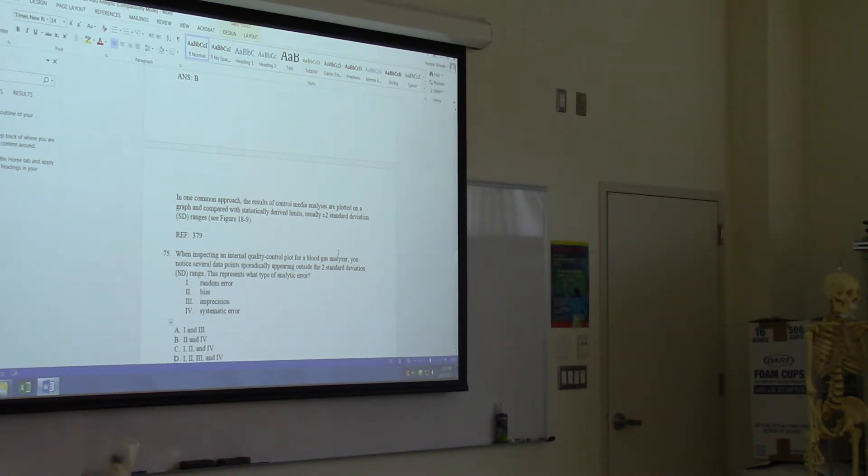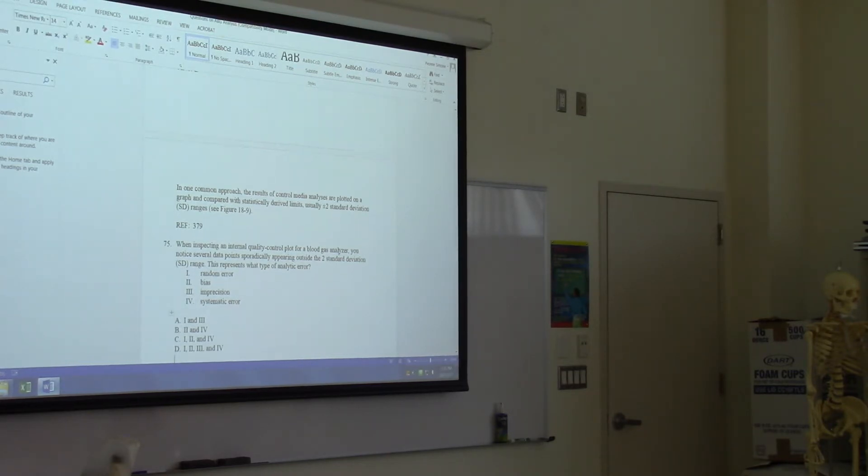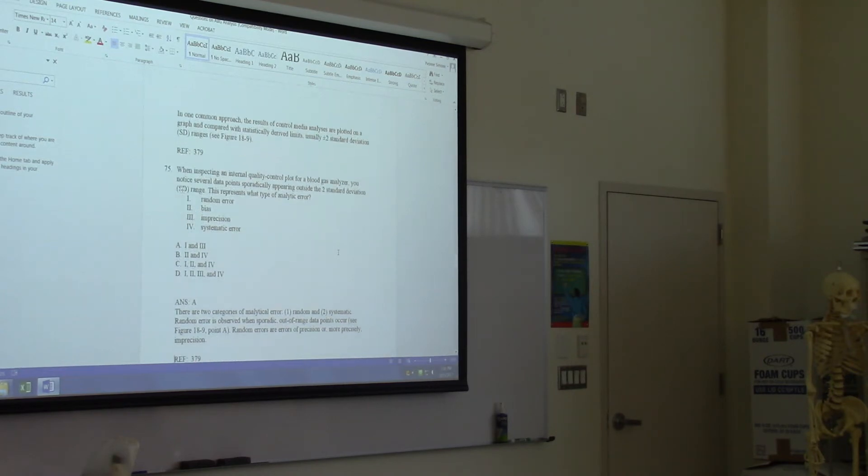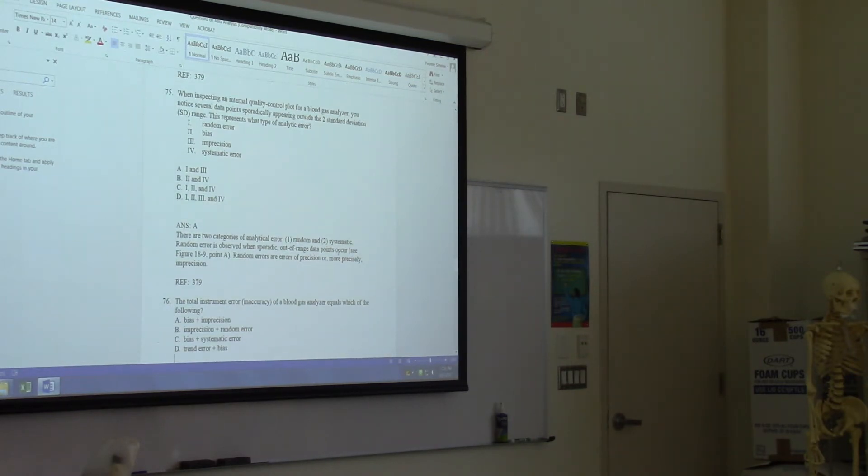When inspecting an internal quality control plot for blood gas analyzer, you notice several data points sporadically appearing outside the two standard deviation range. This represents what type of analytic error? We didn't talk about that. Do you guys want to guess? You guess B, bias and systematic error? That doesn't count. He said it as we saw the answer. All right, so that's not on the test.